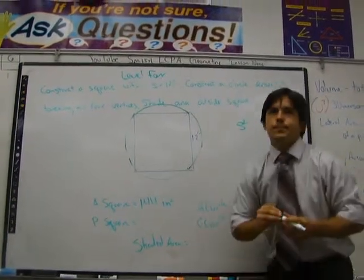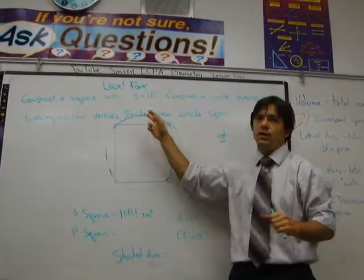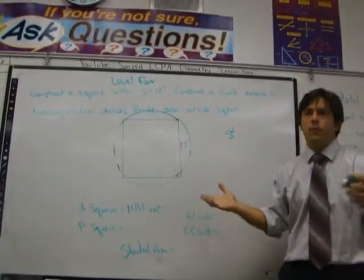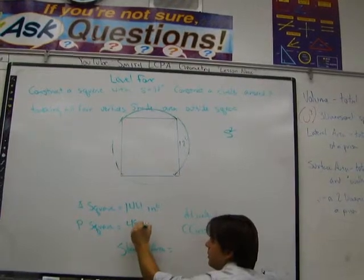The perimeter of the square, it's also really easy. 12 times, how many sides does it have? Four. So what will that be? 48. 48 what? Inches, good.